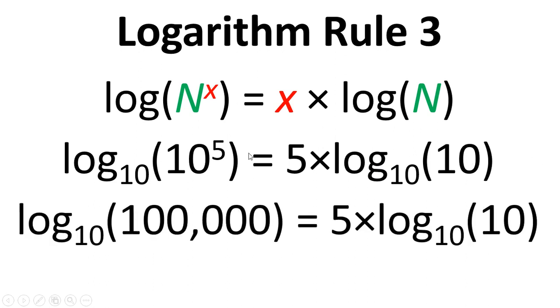If we work this out, log to the base 10 of 100,000 is 5, which equals 5 times 1, because the log to the base 10 of 10 is 1.